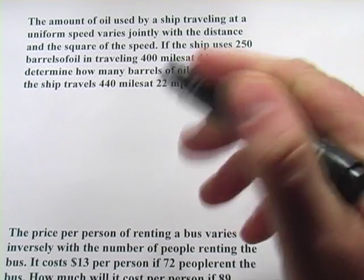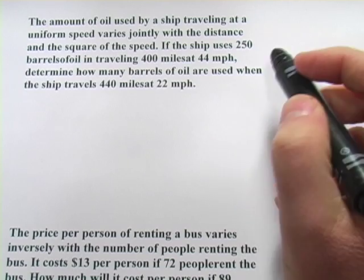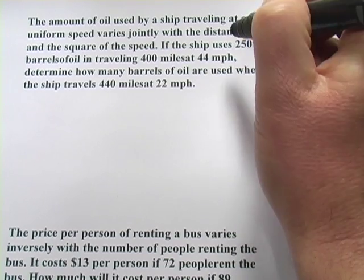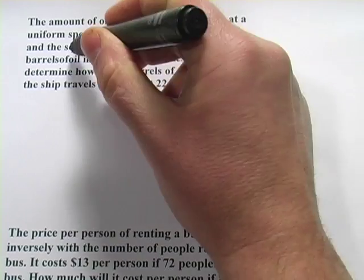The first one: the amount of oil used by a ship traveling at a uniform speed varies jointly with distance and the square of the speed.